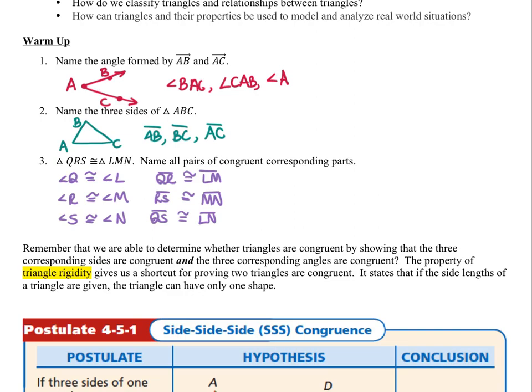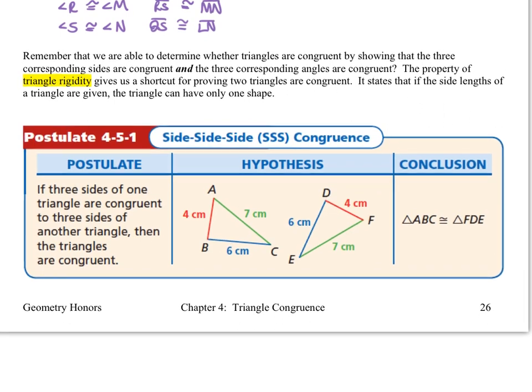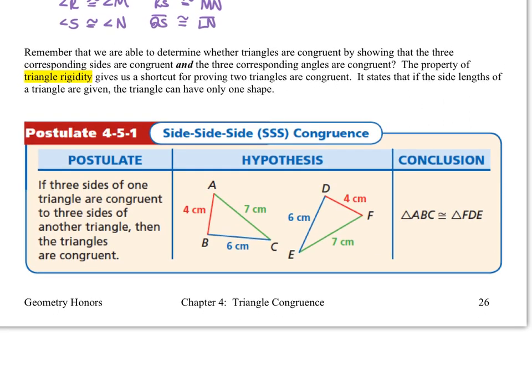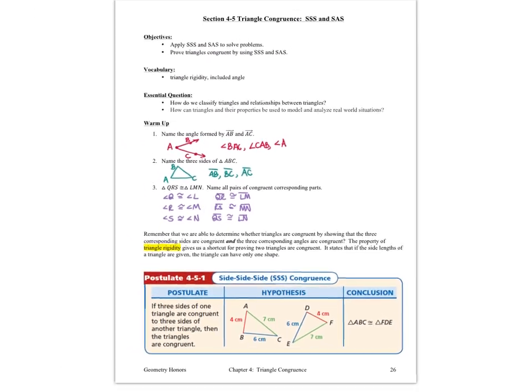We're going to take a look at our first postulate, the side-side-side postulate. This says if three sides of one triangle are congruent to three sides of another triangle, then the triangles have to be congruent. The easiest way to think about this: imagine you have three different sticks, and no matter how many times you try to rearrange them, you're only ever going to come up with one unique triangle.